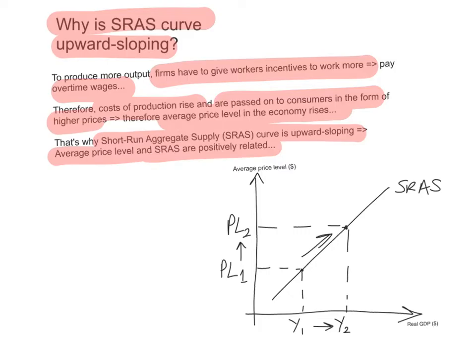As you can see here, in the short run, because prices of the factors of production are fixed, the only way to convince workers to produce more is to pay them overtime, which raises costs of production. Therefore, the only real way for aggregate supply to increase from Y1 to Y2 is for costs of production to rise, and these will be passed on to consumers in the form of a higher price level, so the average price level rises from PL1 to PL2. They are positively related, and this is why the SRAS curve is upward sloping.